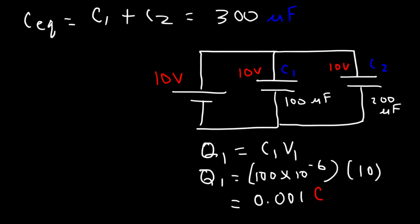What about C2? What is the charge stored on C2? We can use this equation: Q2 is equal to C2 times V2. So that's 200 times 10 to the minus 6 times 10 volts. It's going to store twice the amount of charge compared to C1, so it's 0.002 coulombs.